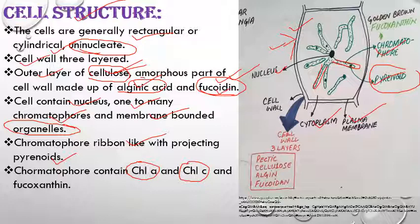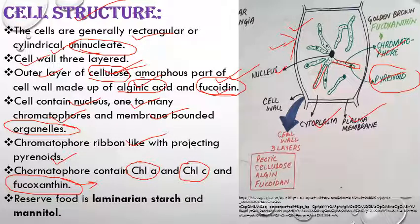The important pigments present are chlorophyll a, chlorophyll c, and importantly fucoxanthin, which imparts the brown color to this group of algae — that is why they are called brown algae. The reserve food materials present are laminarian starch and mannitol. These are the criteria used for classification of brown algae based on their reserve food material.